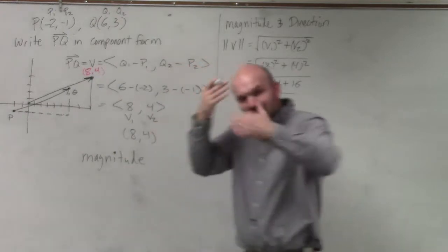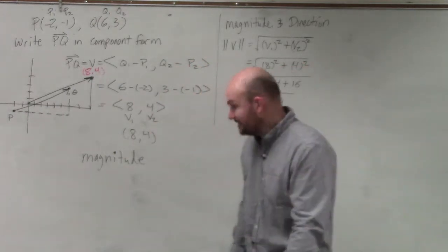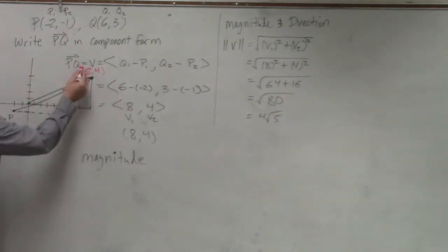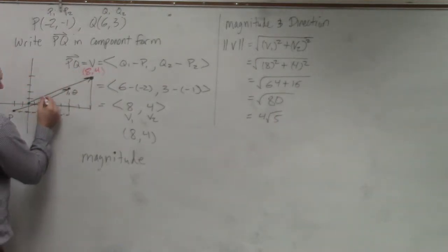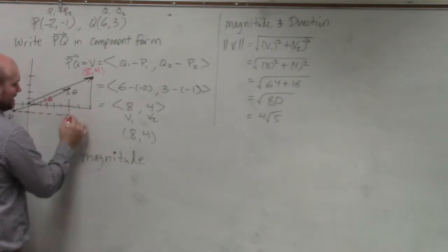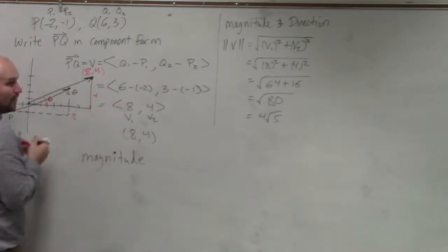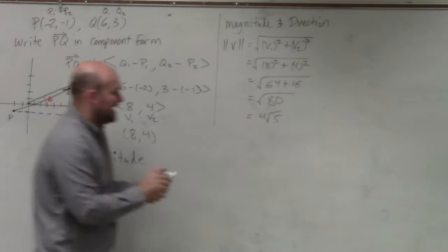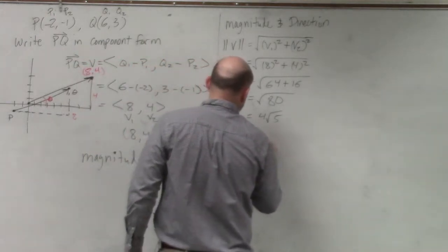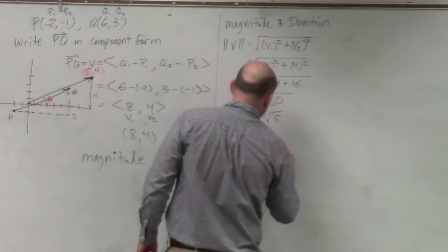To understand direction, the best way to look at this is to think about the triangle. Even though we're talking about this vector, since it's in component form, we can use our understanding of triangles. If I know that this component is 8 and this component is 4, I can find the tangent.